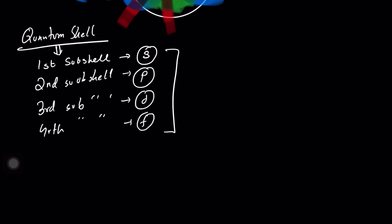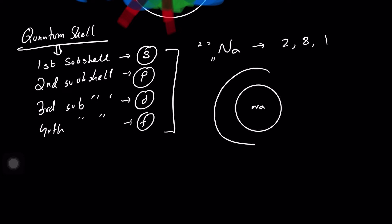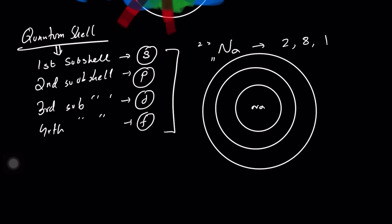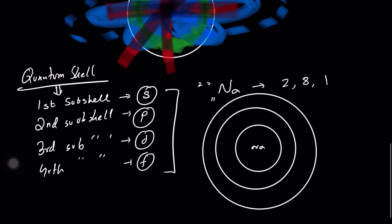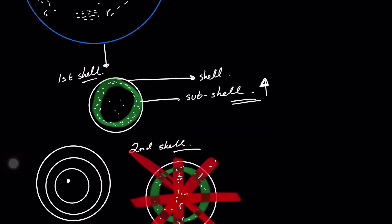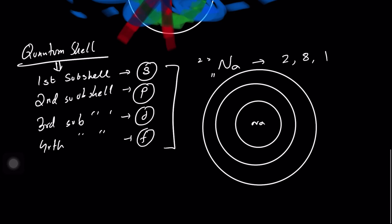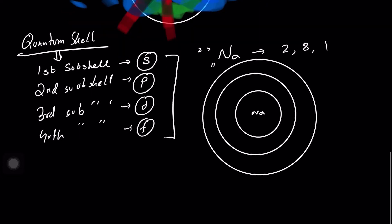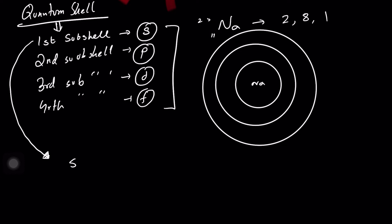Let's break this down using sodium with a normal electronic configuration of 2, 8, 1. The first shell has only one region — one subshell — because it only holds two electrons. That subshell is the S orbital. The subshells are called orbitals, or more precisely, the regions within subshells are called orbitals. Just know for now it's called an S orbital.